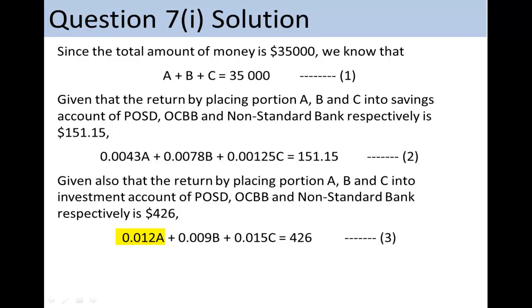Placing portion A in POSD investment account gives us 0.012A investment return. Placing portion B in OCBB investment account gives us 0.009B investment return. And placing portion C in non-standard bank gives us 0.015C investment return. The sum of these three must give us $426.